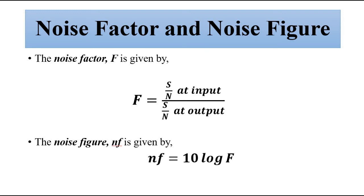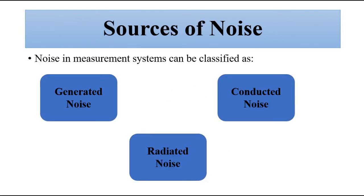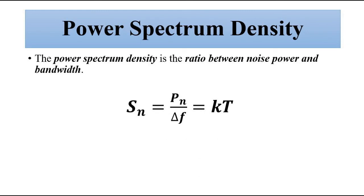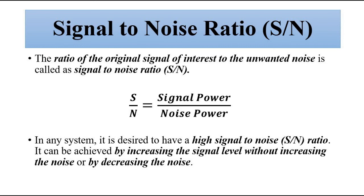We have discussed some of the basic concepts related to noise, starting from the sources of noise and various parameters associated with measurement of noise — noise factor, noise figure, power spectral density, and signal-to-noise ratio. I hope you liked this video. Please subscribe to the Engineering Tutorial channel for more videos related to engineering, science, and technology. Have a great day. Thank you very much.